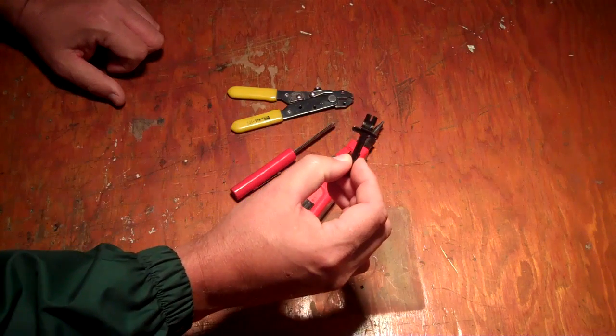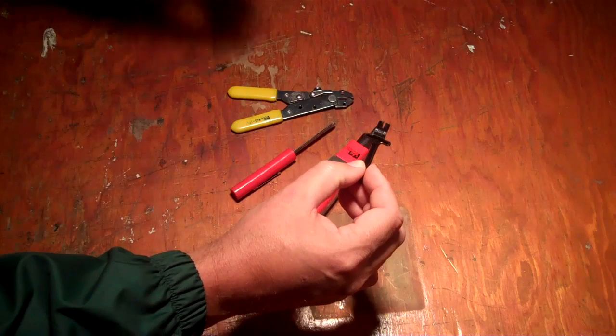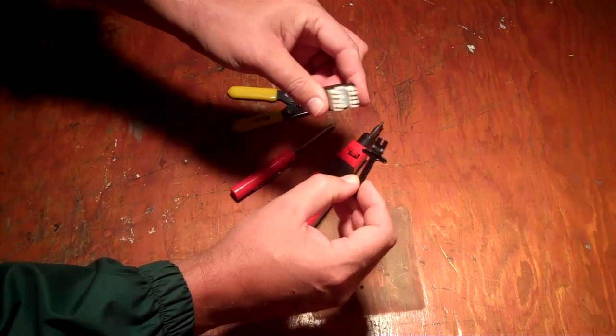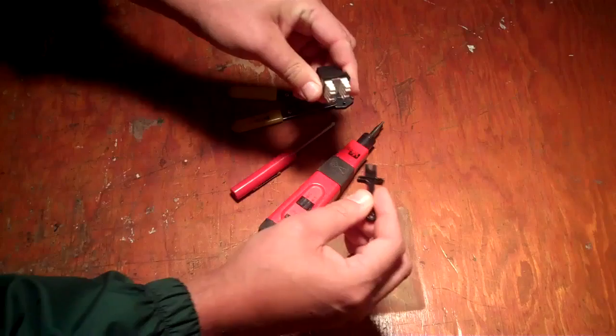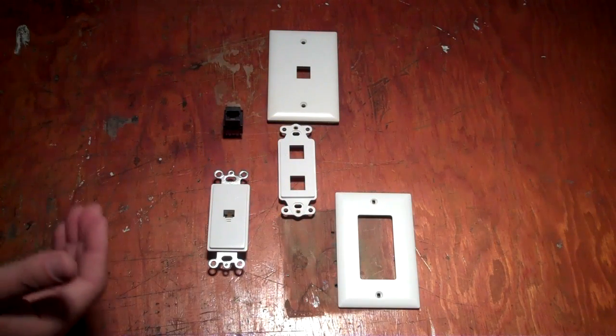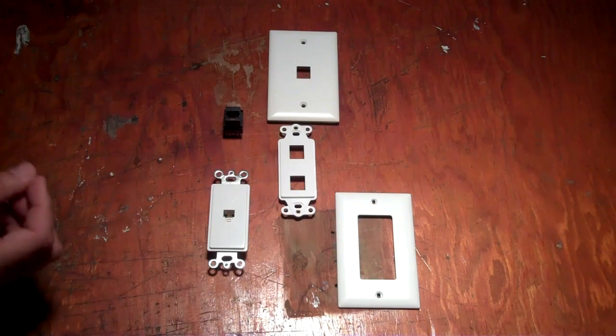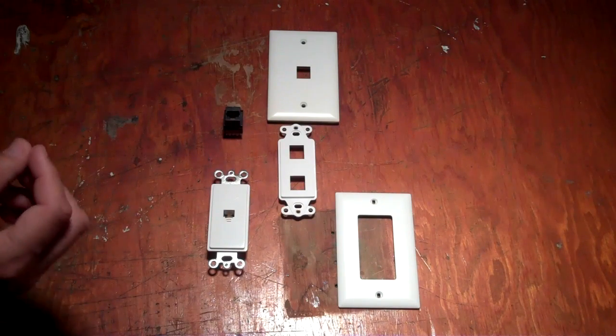Sometimes these will come from the big box retailer when you purchase these. And it just slips down like that. Okay, one thing you're going to need to do right away is make a decision on what type of telephone jack you actually want to install.